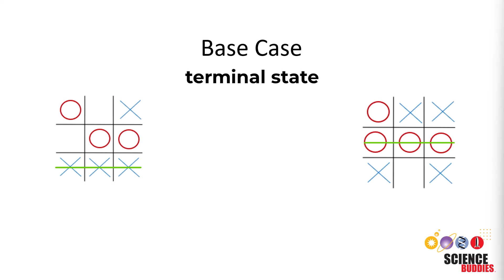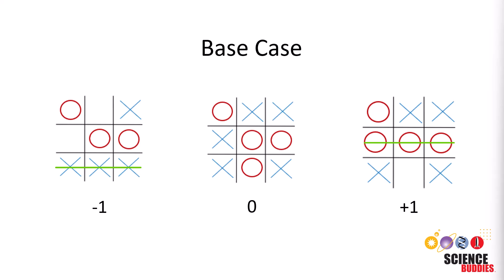Every time we run the Minimax algorithm, it will first check the base case. The base case is indicated by what we call a terminal state, meaning that the game ended in a win, a loss, or a draw. At this stage, the evaluation function assigns a score based on the outcome.